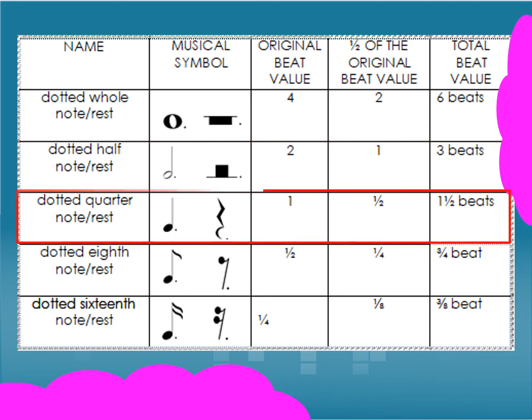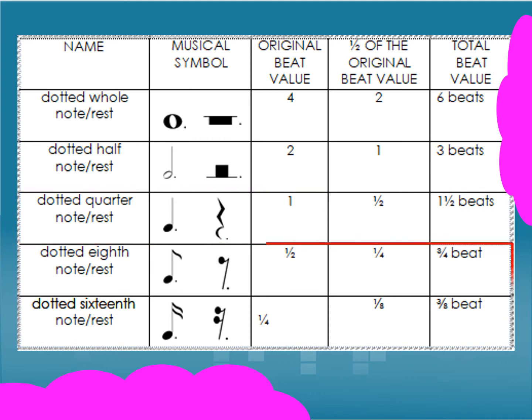A dotted quarter note or rest has an original beat value of one, and one half of the original beat value of one is one-half. Therefore, the total beat value of a dotted quarter note or rest is one and one-half. For a dotted eighth note or rest, the original value is one-half and one half of that is one-fourth, giving a total beat value of three-fourths beat.